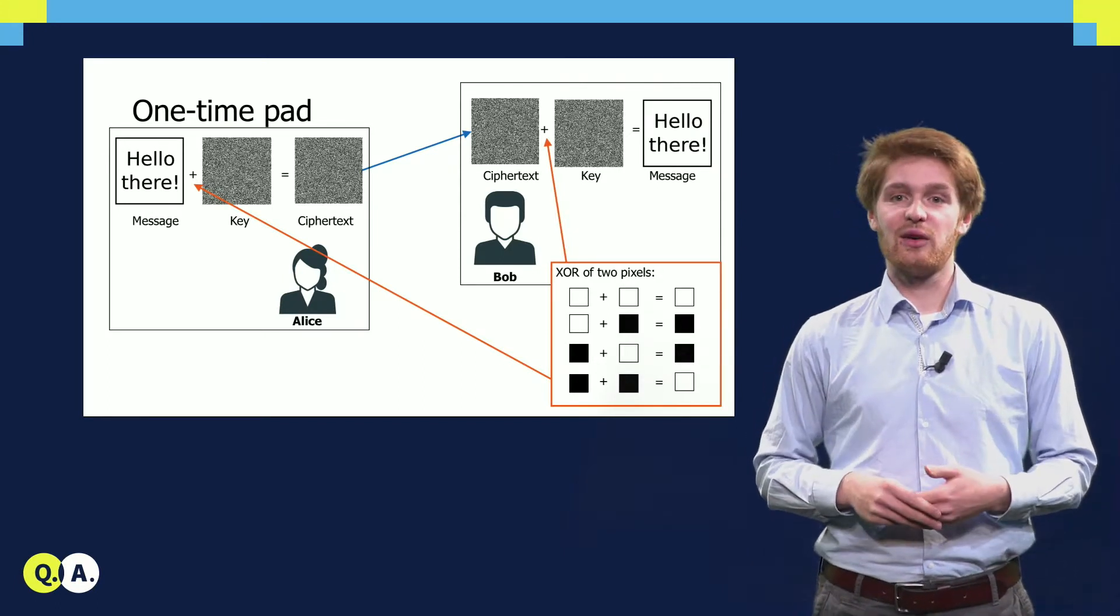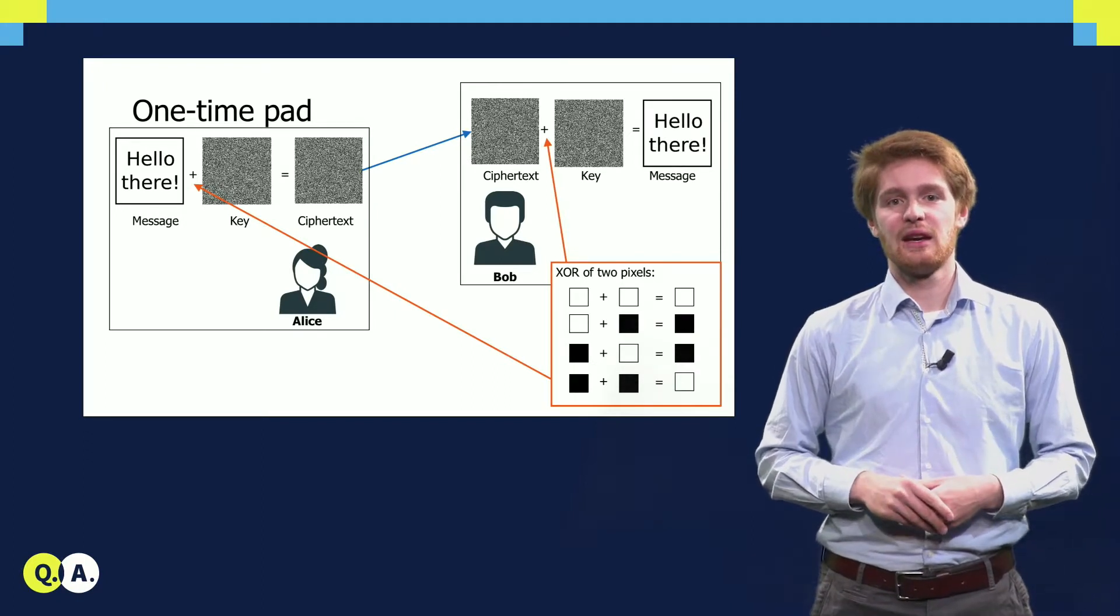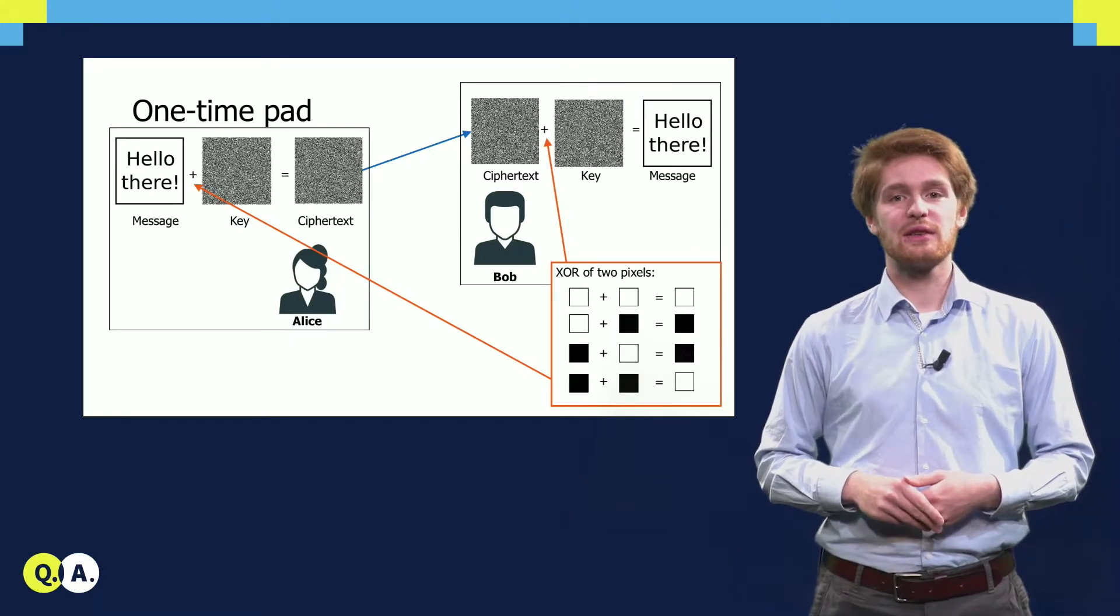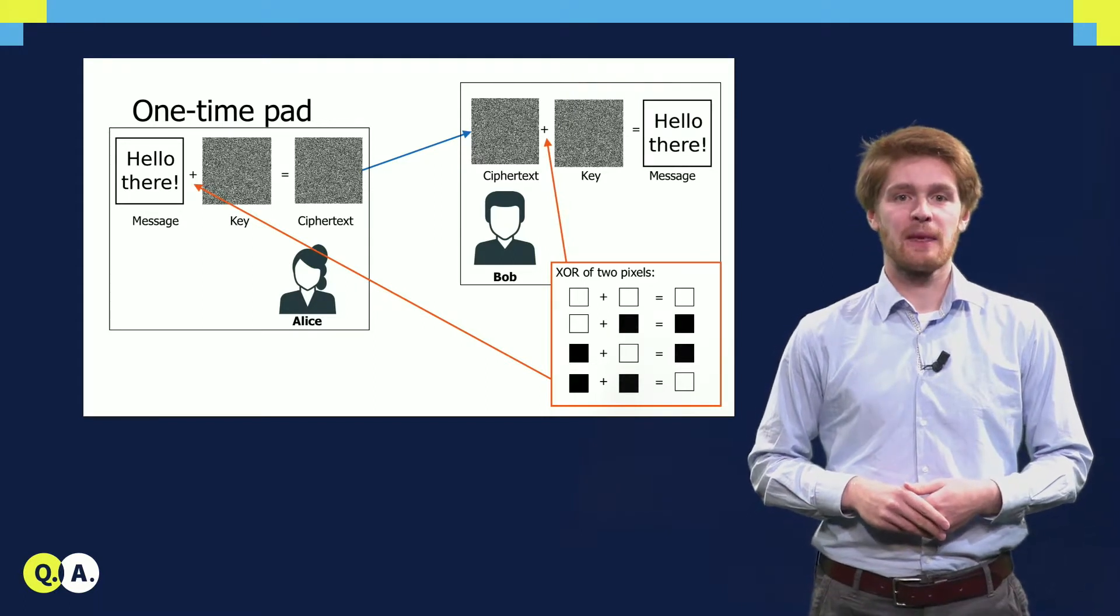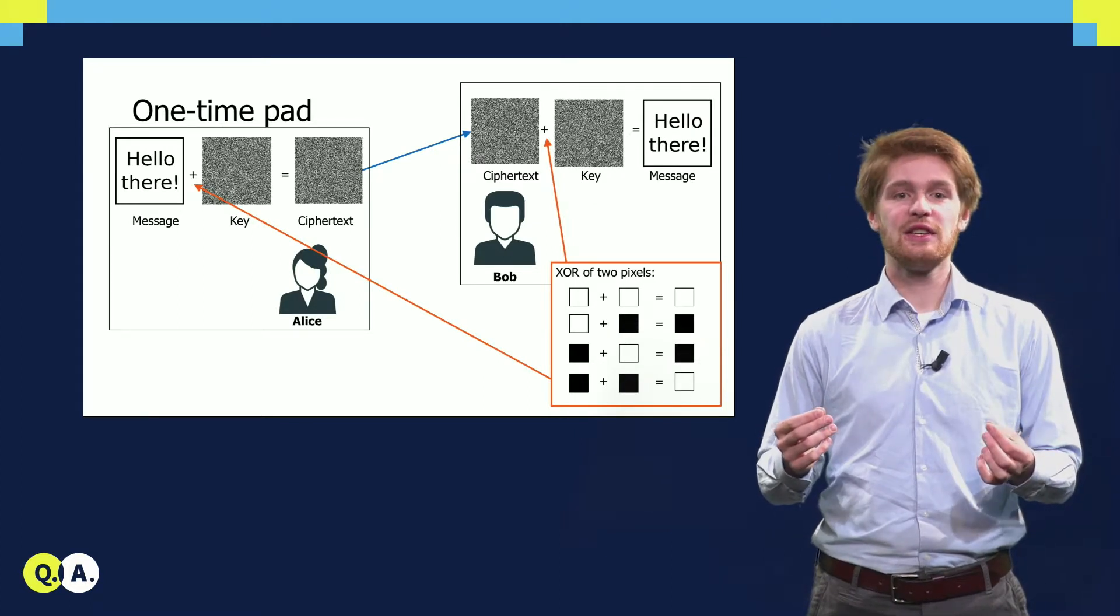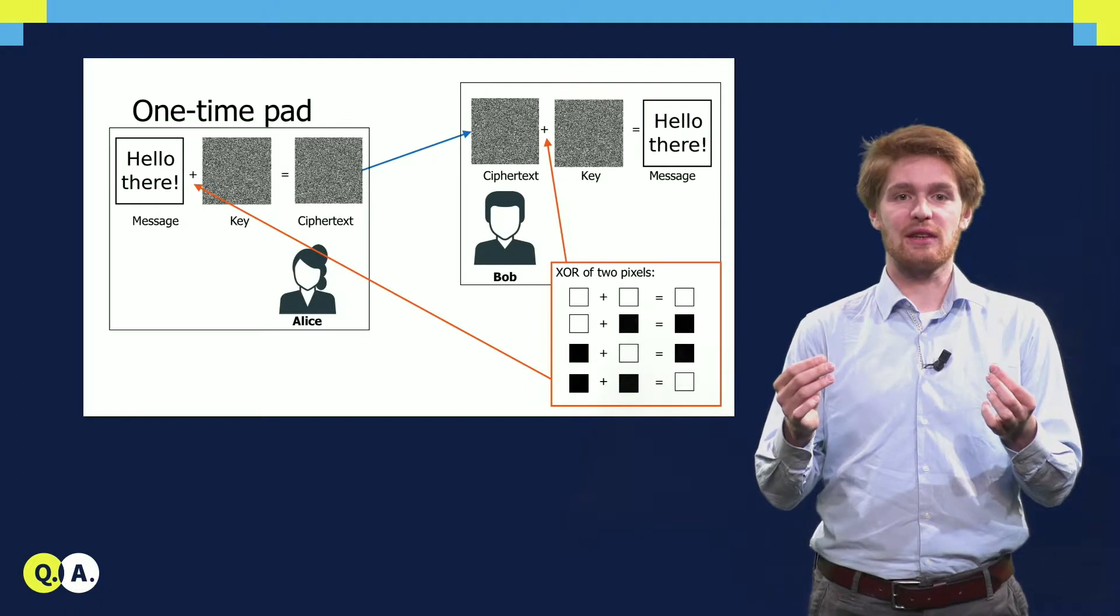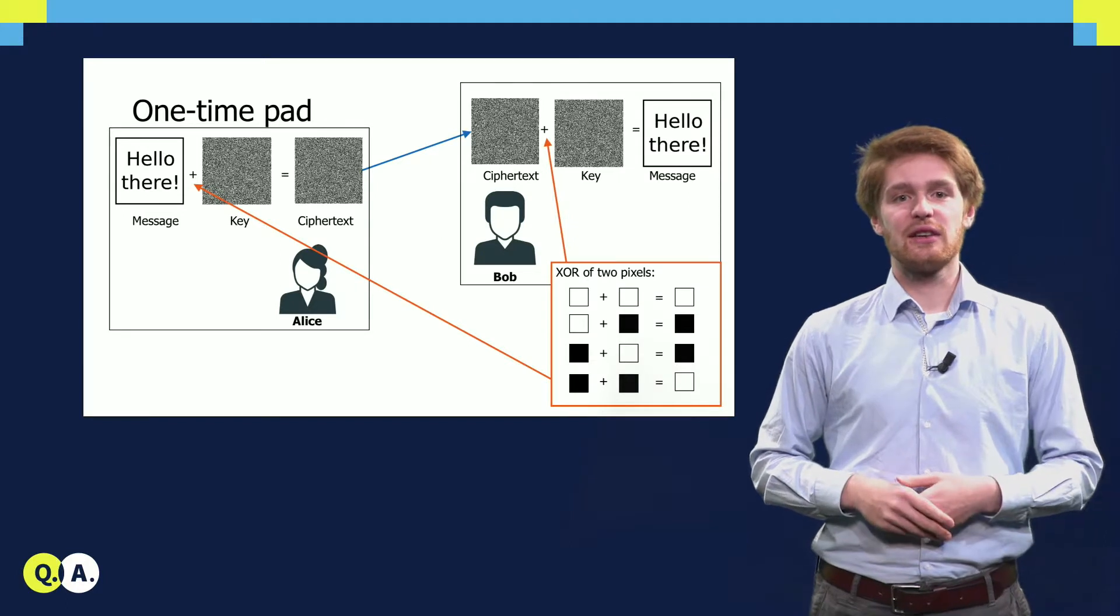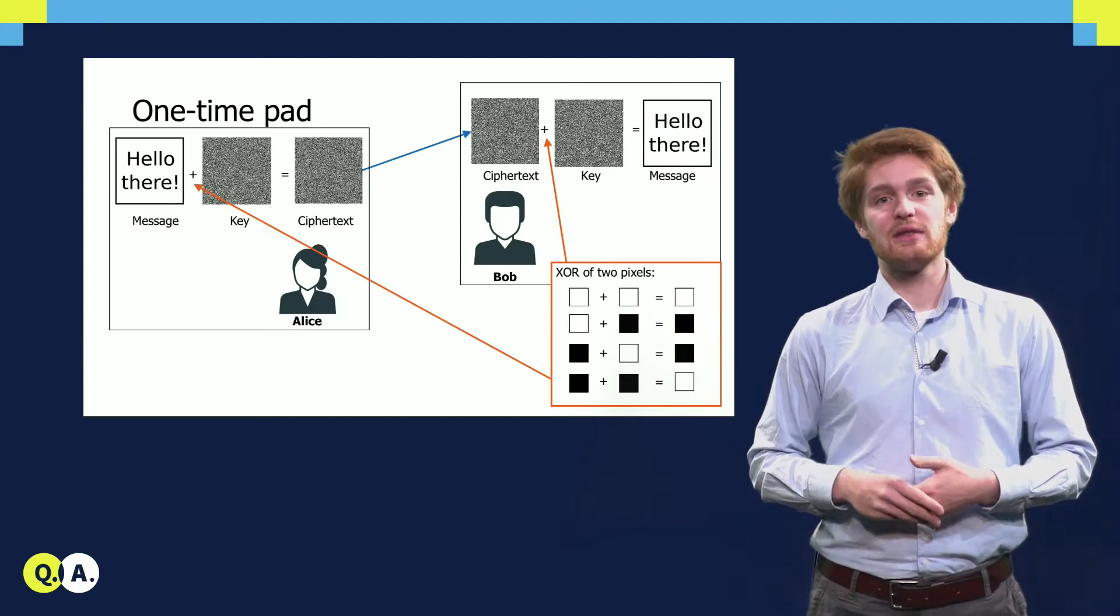The secret message is hello there, here depicted on the left of the screen as an image. In the one-time pad scheme, Alice takes her key and takes the so-called bitwise-exclusive-or, or bitwise-xor of her two images. This means that for every pair of pixels, one from the message and one from the key, she creates a new pixel, which is white if the two original pixels had the same color, and black if they were different. The new image she creates this way is called the ciphertext. This is the image she will send to Bob.